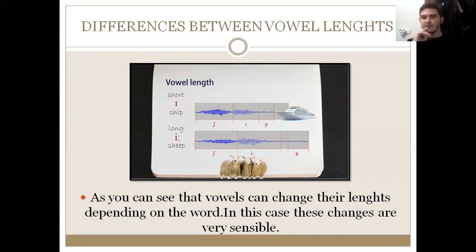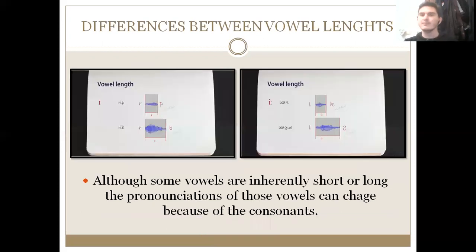As I've said before, vowels can change their length. As you can see in this example, this is quite sensible. You would say the E vowel in ship in a short way, you would say ship, but you say sheep, and you lengthen it a little bit more. It's very sensible, and it's very easy to understand that.